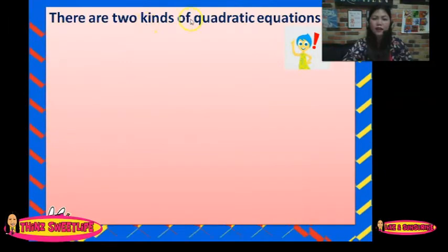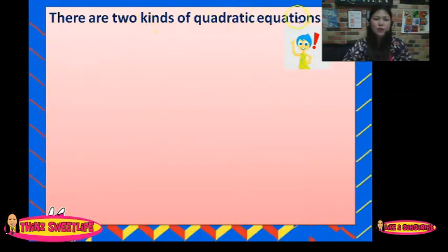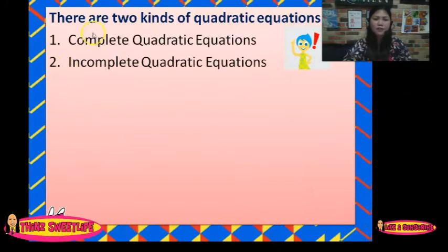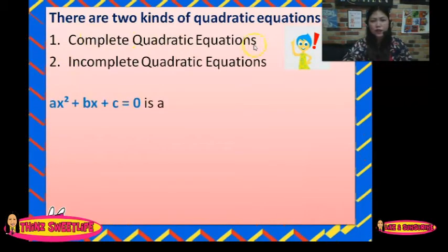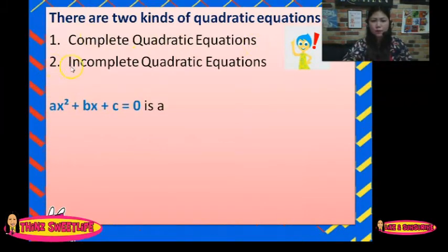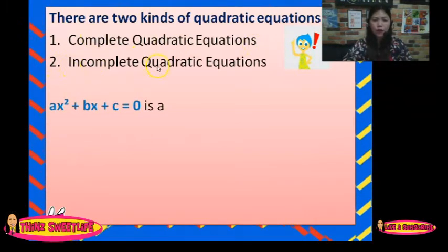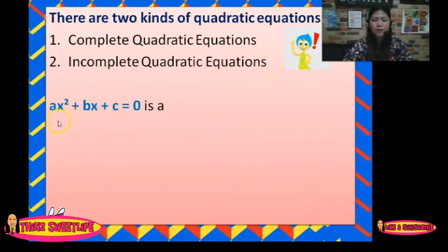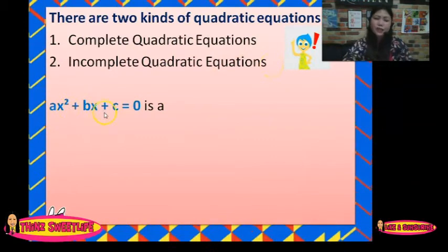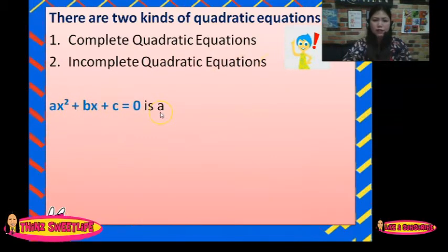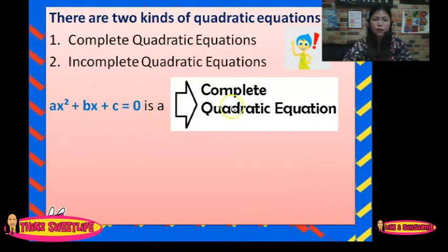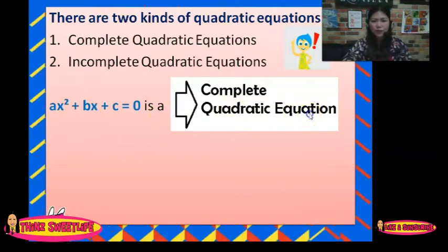There are two kinds of quadratic equations. Number one, complete quadratic equations. Number two, incomplete quadratic equations. Ax squared plus Bx plus C equals 0 is called a complete quadratic equation.